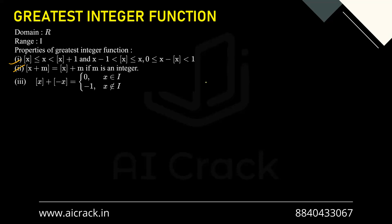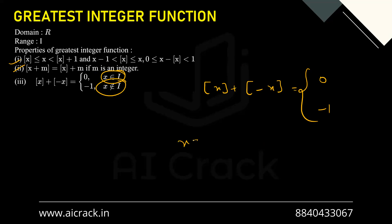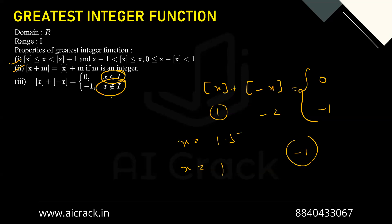For the fifth property: GIF(x) + GIF(-x) equals zero for integral values and -1 for non-integer values. For x = 1: GIF(1) + GIF(-1) = 1 + (-1) = 0 ✓. For x = 1.5: GIF(1.5) + GIF(-1.5) = 1 + (-2) = -1 ✓. So for non-integral values this gives -1, and for integral values it gives 0. These are the three main properties of the GIF function.